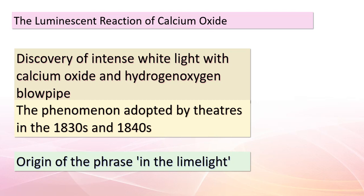Today, we're going to explore an intriguing historical discovery that led to the creation of a bright and intense light source. In the 1820s, a scientist named Goldsworthy Gurney discovered that when he heated calcium oxide with a hydrogen-oxygen blowpipe, the calcium oxide emitted a dazzling white light. This discovery caught the attention of theaters in the 1830s and 1840s, who adopted this method to illuminate stages — giving birth to the phrase 'in the limelight.' However, these lights required constant attention and posed a fire hazard, eventually leading to their replacement by electric lighting, pioneered by Thomas Edison in 1879.